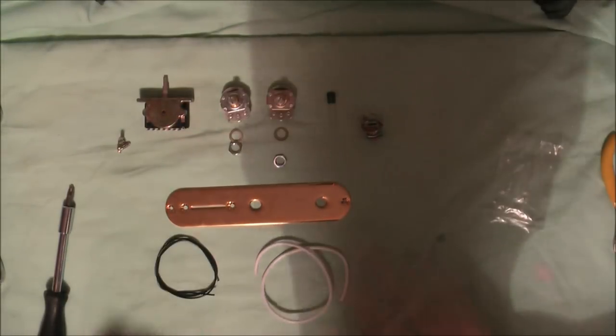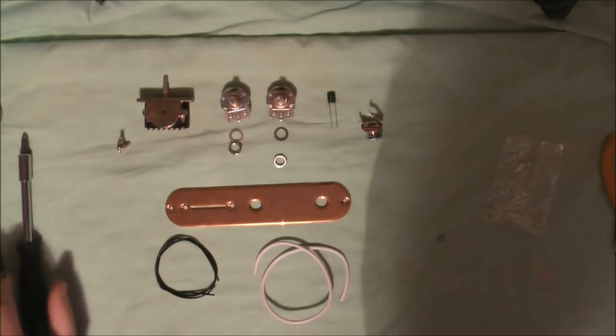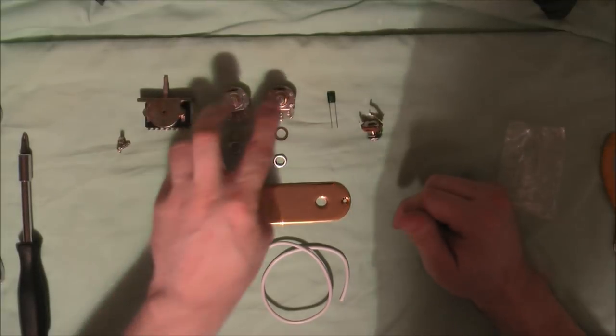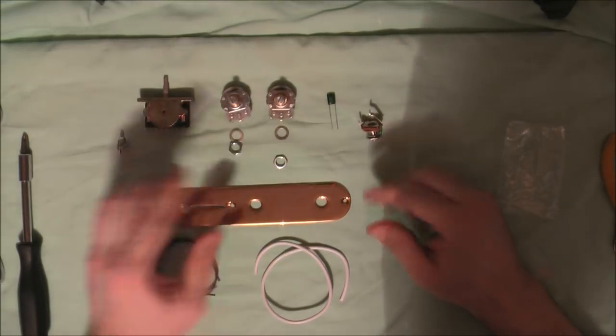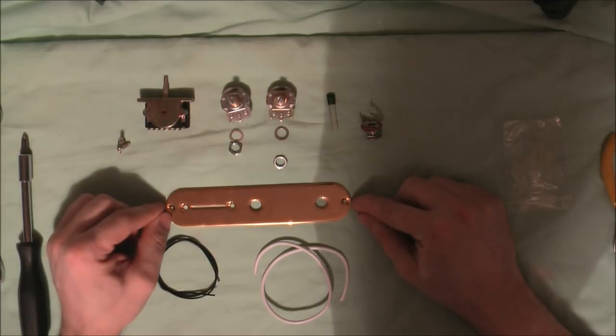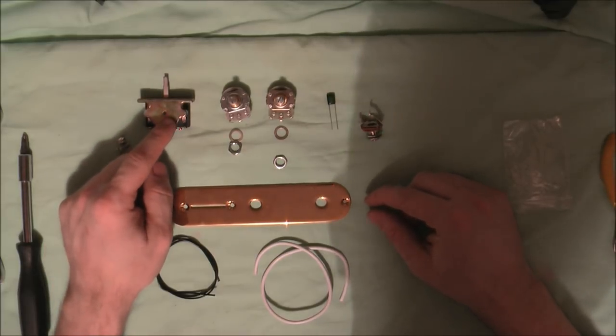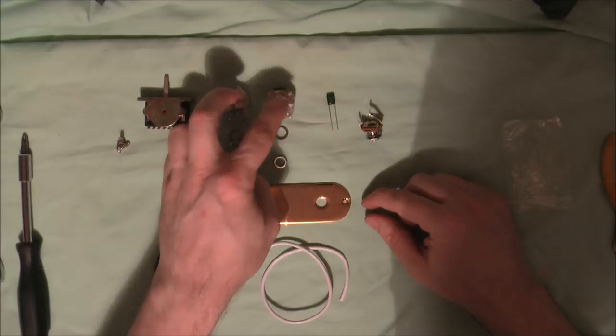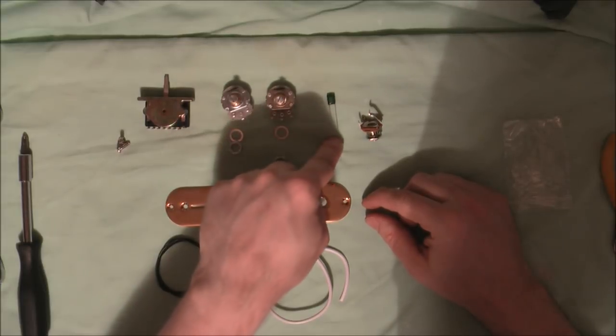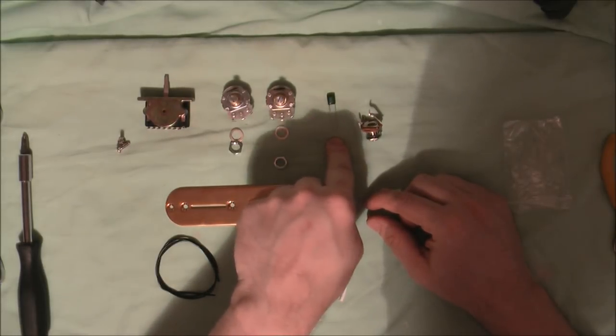Okay so here are all the parts we're going to be using for this particular build. We've got the three-way switch, we've got two pots and a capacitor. This is for a customer of ours. It's a standard three-way switch.